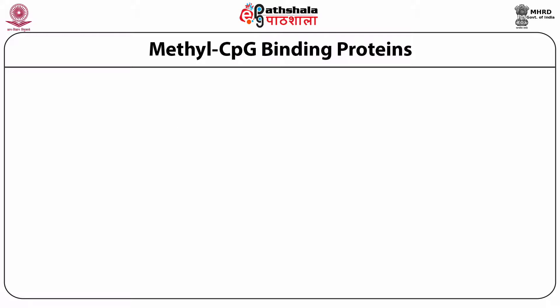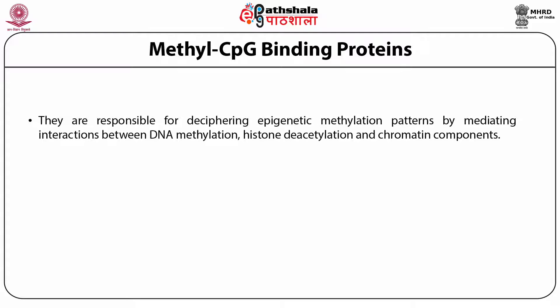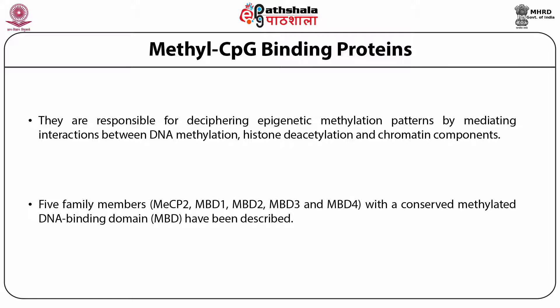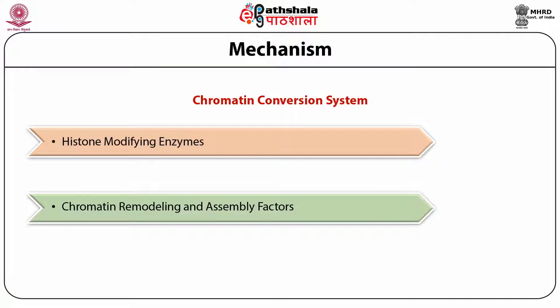In addition to methylated DNA, methyl CpG binding proteins are also required to inhibit transcription by methylation-insensitive transcriptional factors. Methyl CpG binding proteins are responsible for deciphering epigenetic methylation patterns by mediating interactions between DNA methylation, histone deacetylation, and chromatin components. Currently five family members with a conserved methylated DNA binding domain (MBD) have been described: MeCP2, MBD1, MBD2, MBD3, and MBD4.